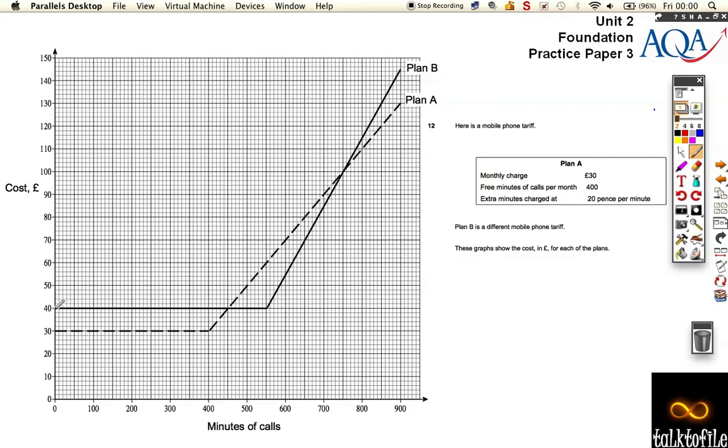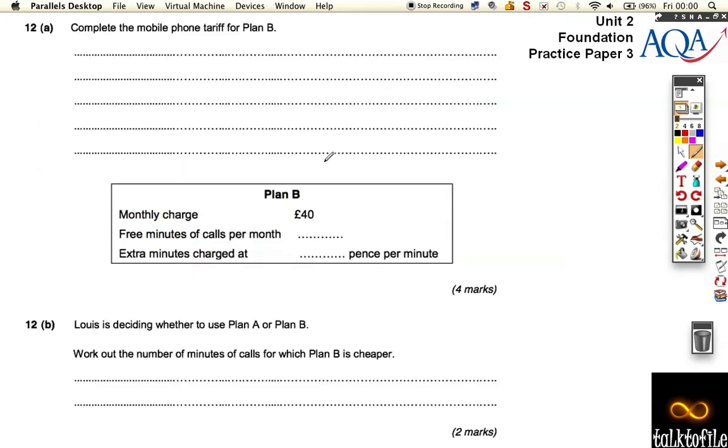Let's go back over here. Well, it's £40 a month, so it's a bit more expensive to start with. But Plan B, you get 550 minutes, because if you look here, that's how the free minutes go up to—it stays on a straight line up until 550, so you get 550 minutes free.